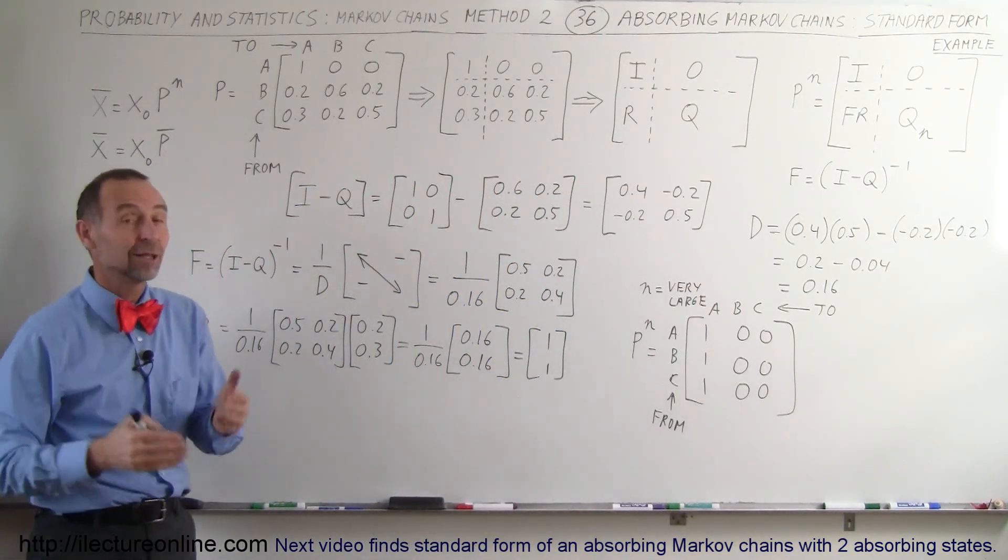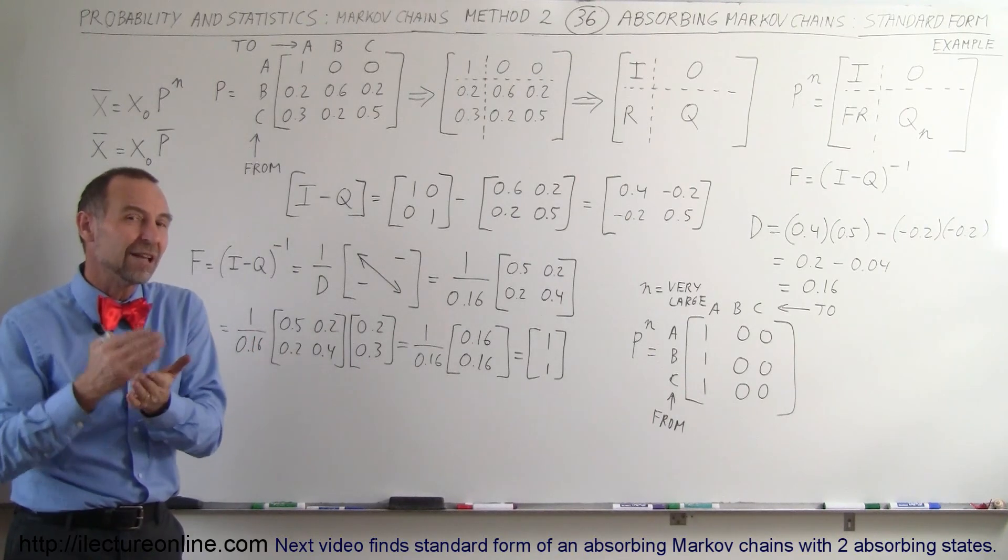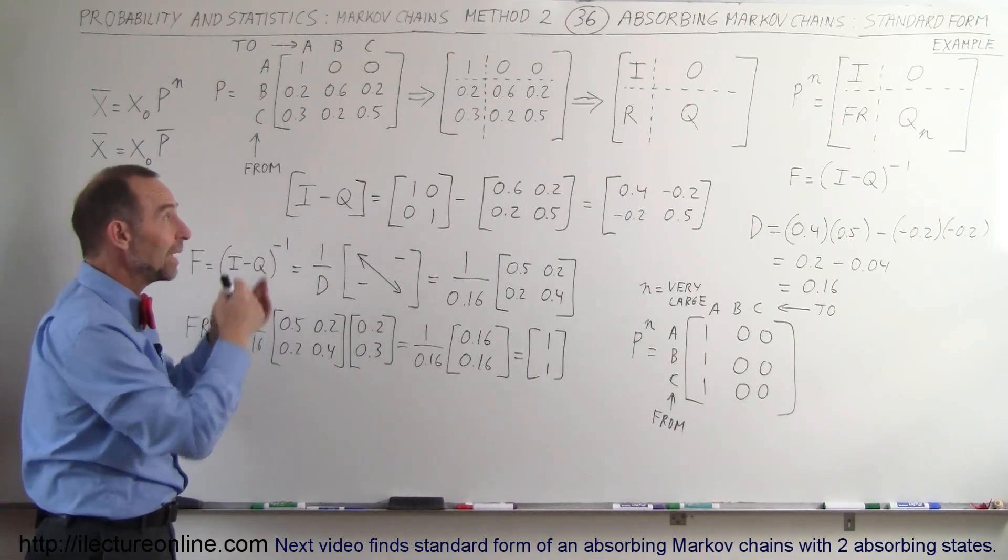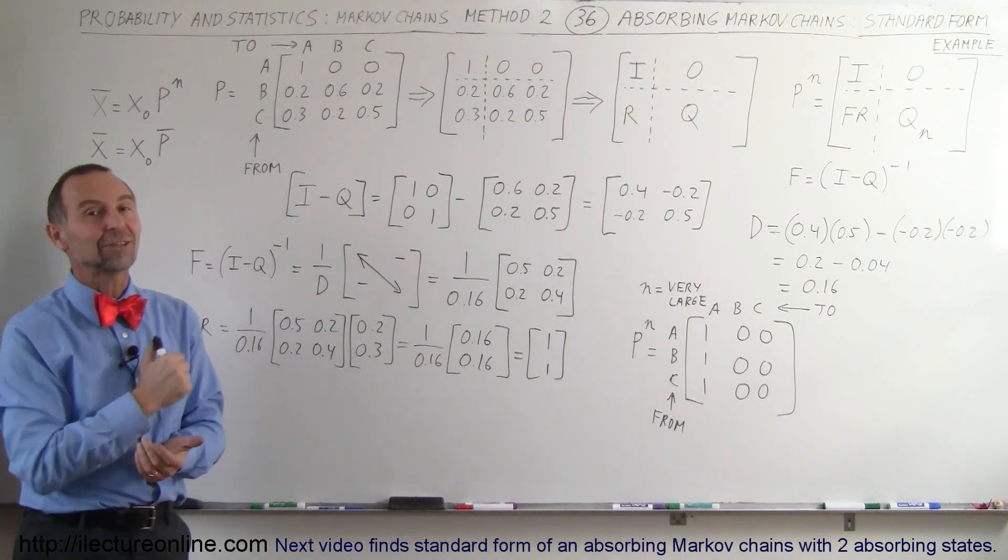And that's how we find the Absorbing Markov Chain final or stable transition matrix when we have this kind of form, and that's how we do that.